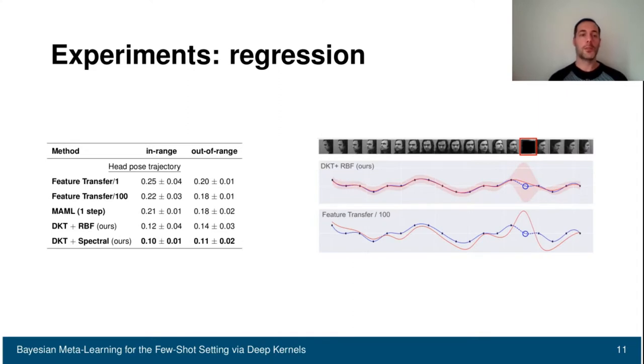We have another regression task on pose trajectory. Here we provide as input images taken from a discrete manifold of head poses. And on the left, you can see the quantitative results showing the lowest error for our method.